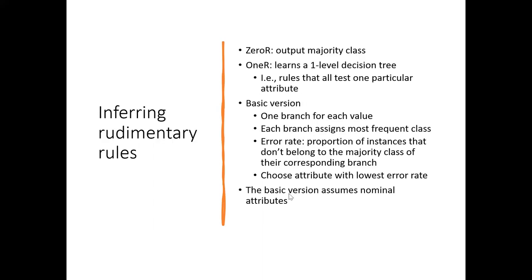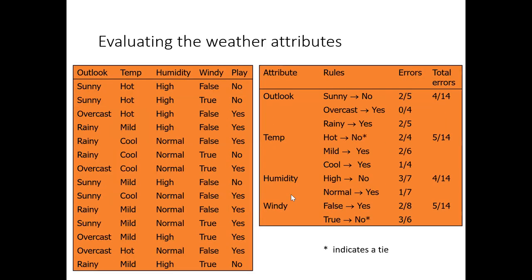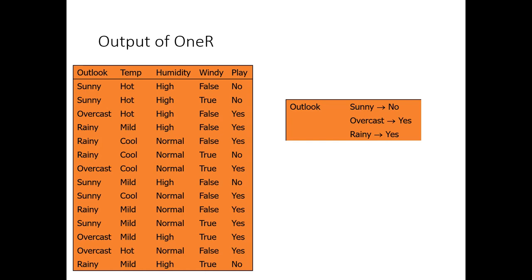Let's quickly review what we discussed so far with the 1R algorithm. For each attribute, you count how many times a particular attribute value appeared, and for those attribute values you assign the most frequent class. Based on that you calculate the total error for each attribute, and the decision is the attribute with the least total error.